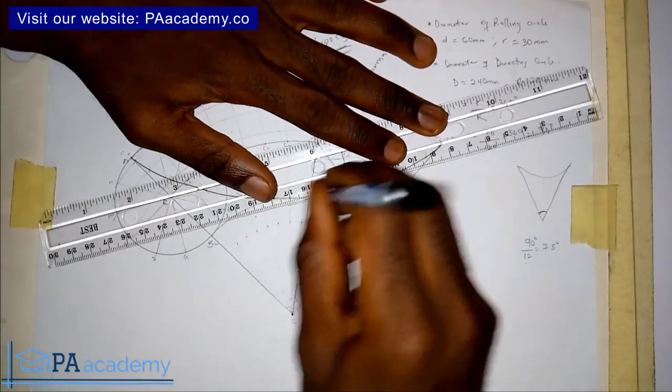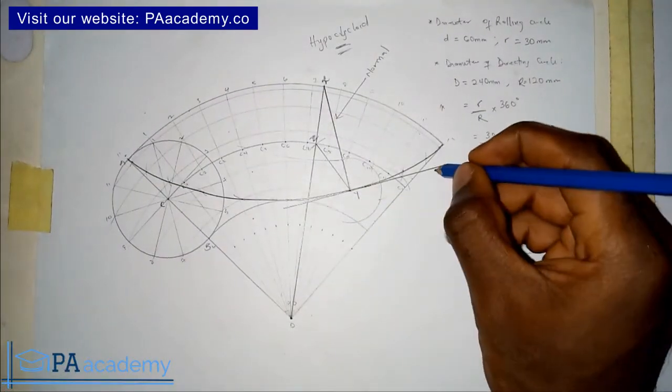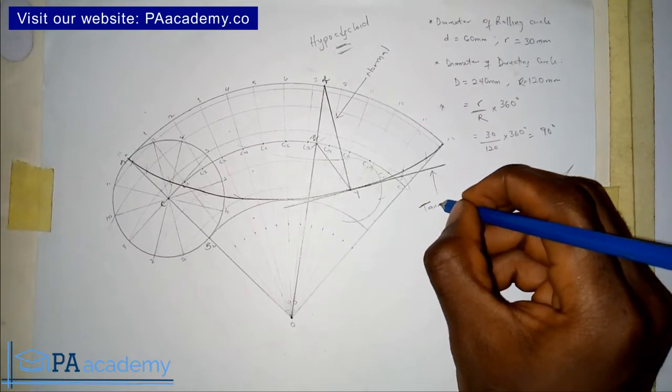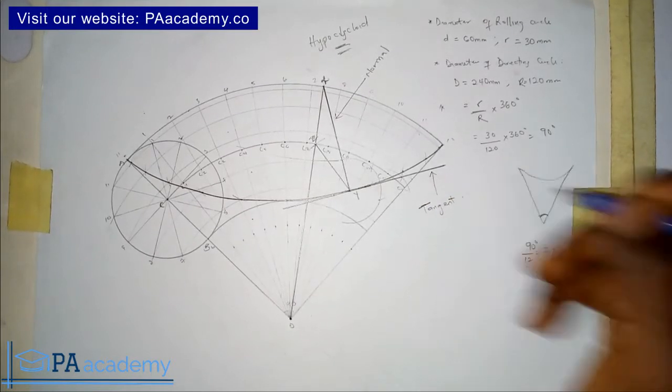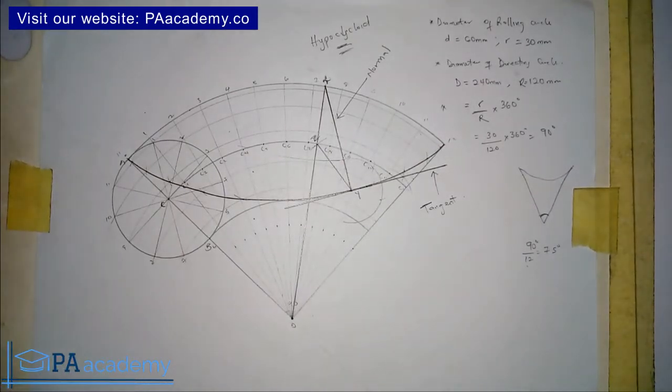You are going to draw it across Y to pass through Y. So this line that I've just drawn represents the tangent. So you can see, this is how you go about drawing a tangent to a hypocycloid.